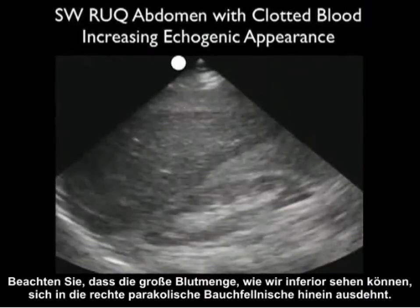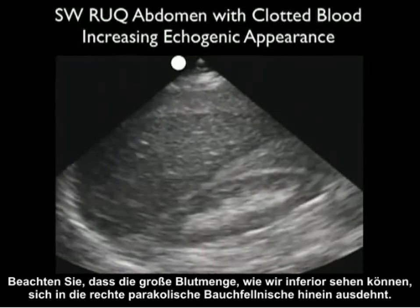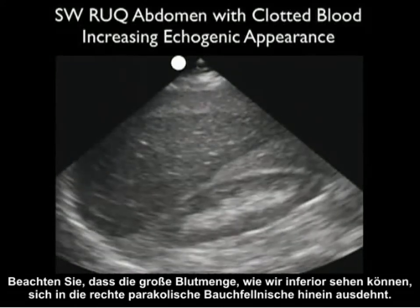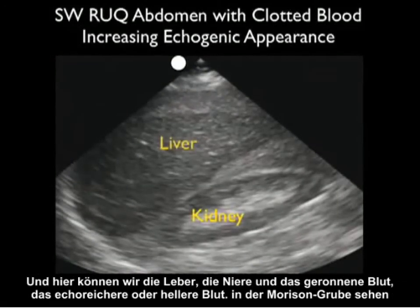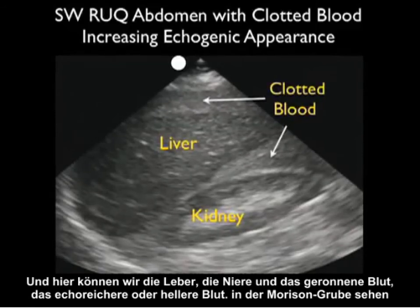Notice that the large amount of blood extends into the right pericolic gutter as we scan inferiorly. Here we can see the liver, the kidney, and the clotted blood — that more echogenic or lighter blood — within Morrison's pouch.